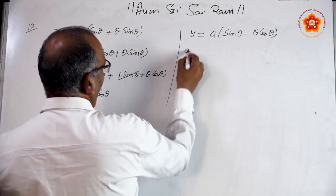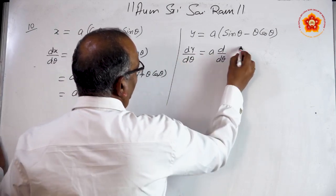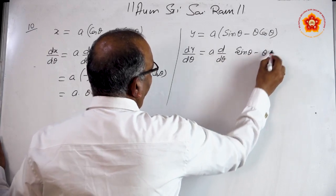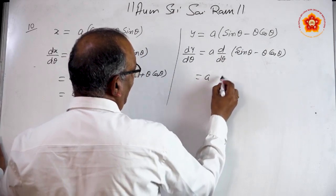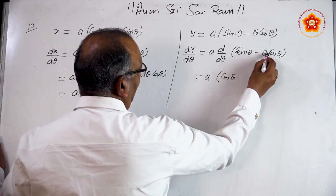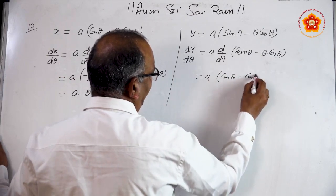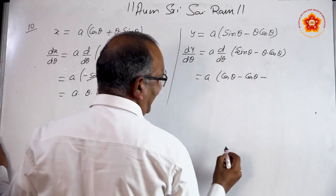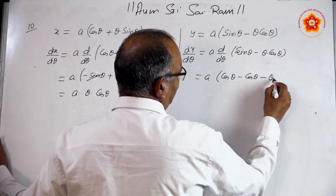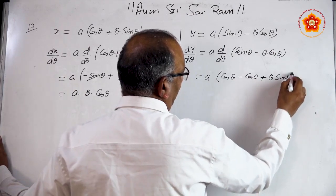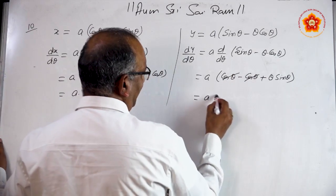Coming to y, find dy/dθ. A is outside; take the derivative of (sin θ minus θ·cos θ). The derivative of sin θ is cos θ. Applying the product formula to θ·cos θ: d/dθ of θ is 1, so 1 times cos θ is cos θ. The derivative of cos θ is minus sin θ, and there is a minus sign outside. cos θ terms cancel, and we get a·θ·sin θ.